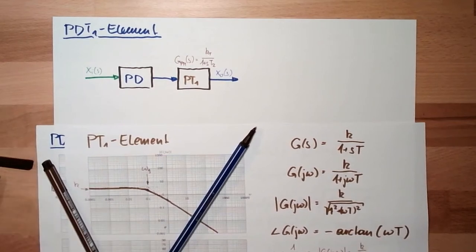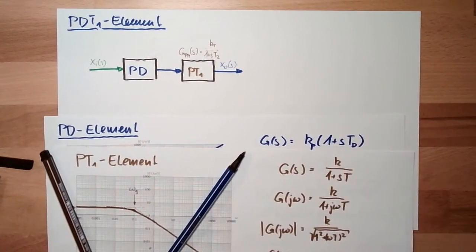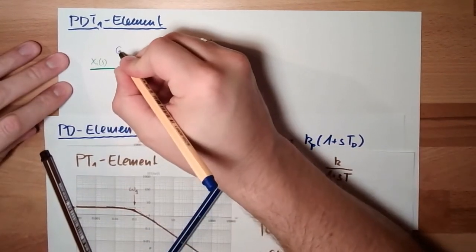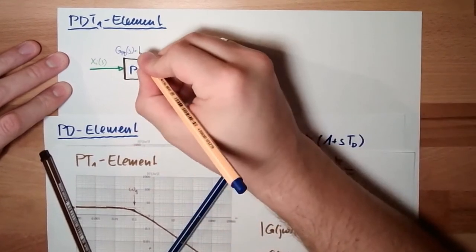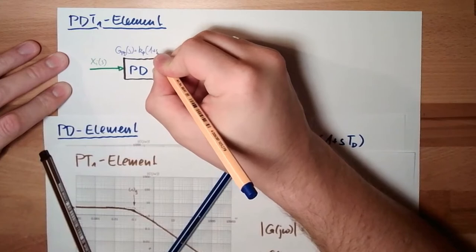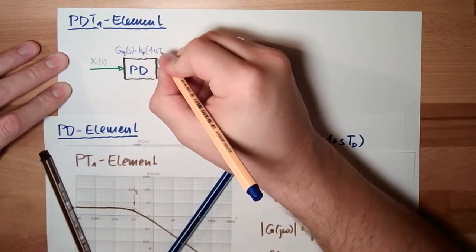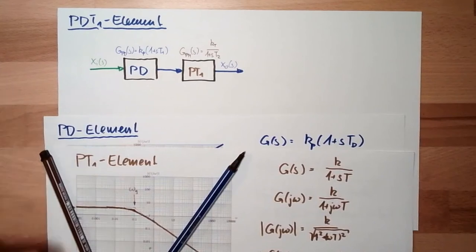The transfer function of the PD element also has a D inside. G_PD(s) is K_p multiplied by (1 plus S·T1), because it's the first element. So there are two time constants: T1 and T2.